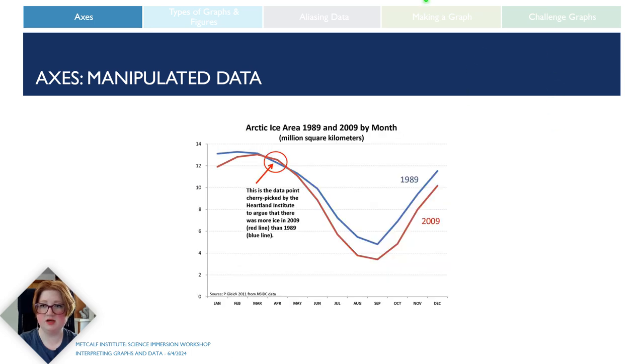I would also like to point out that while graphs can be used to manipulate the data and depict it in misleading ways and to try and push a message, they can also provide more context to cherry-picked examples. While yes, there was more arctic ice in 2009 in April compared to April of 1989, the rest of this graph does not show the same trend. Therefore, it would be inaccurate to say that as a whole, the area of arctic ice is greater in 2009 than it was in 1989.